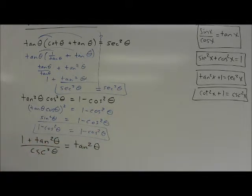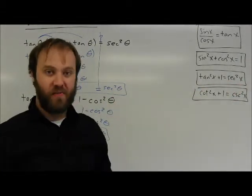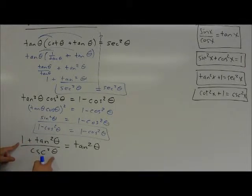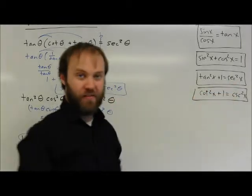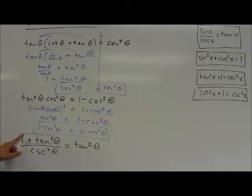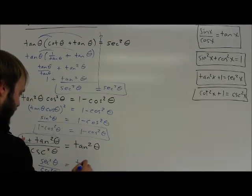Last example in this set: (1 + tan²θ) / csc²θ = tan²θ. I could replace tan²θ with sec²θ minus 1, but I'm going to focus on the more complicated side. I noticed that 1 plus tan²θ is one of my trig identities — that's the same thing as sec²θ. That gets rid of the addition, and I don't have any addition on the other side, so I like something that eliminates it. I write this as sec²θ over csc²θ equals tan²θ.